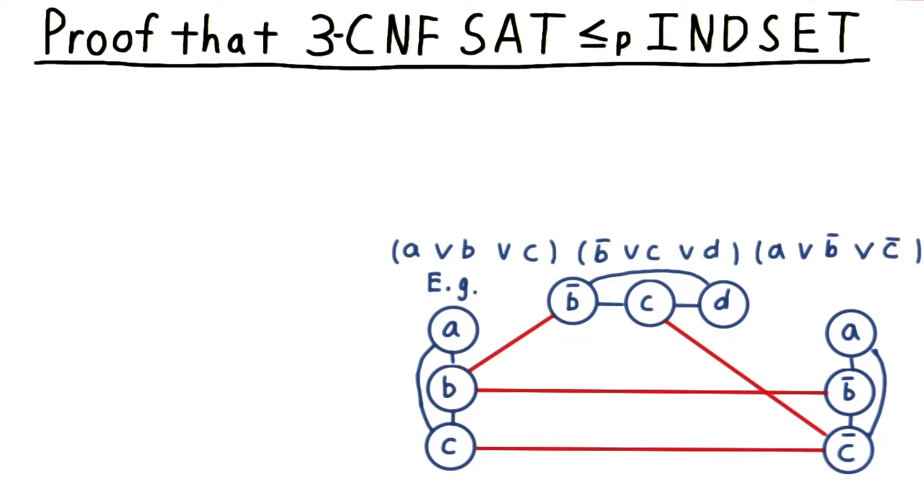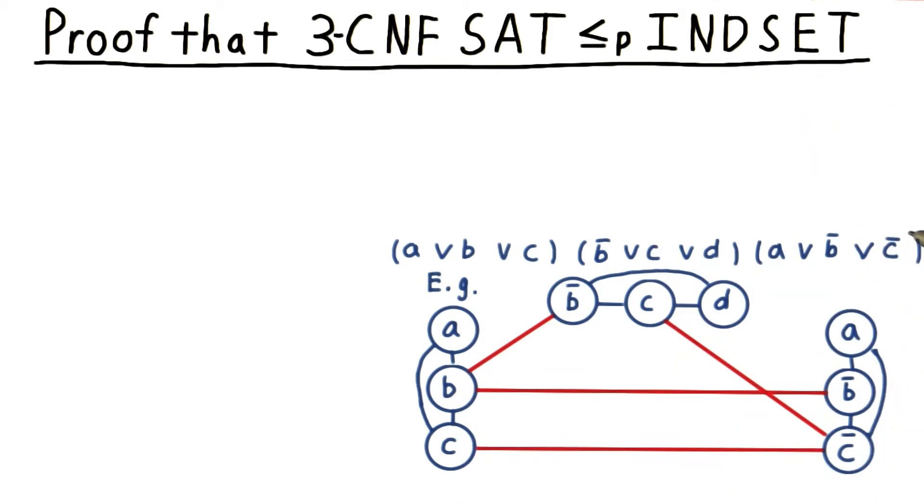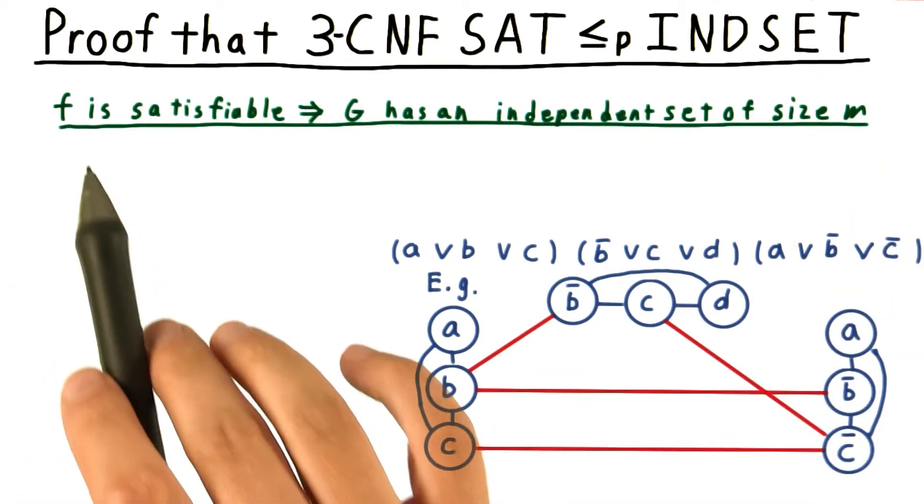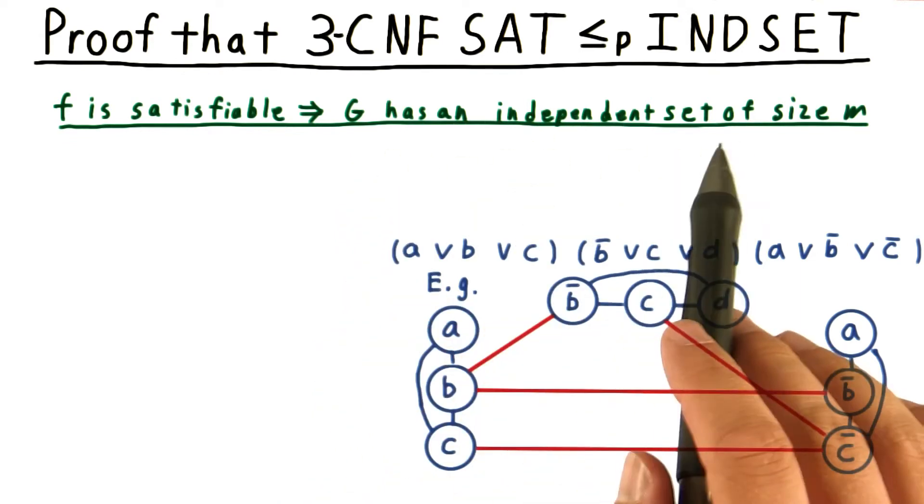Next, we're going to prove that the transformation just described does, in fact, reduce 3CNF satisfiability to independent set. We start by arguing that if F is satisfiable, then the output graph G has an independent set of size M.